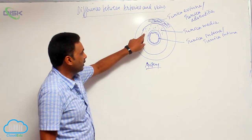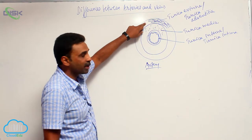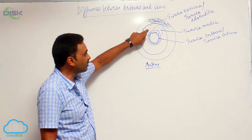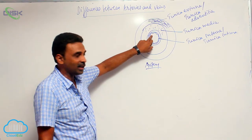Tunica externa, tunica media, tunica interna. Tunica externa is made up of mostly collagenous fibers. Tunica media is made up of smooth muscles or involuntary muscles. Tunica interna is a single layer of endothelial layers.